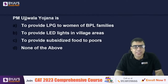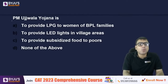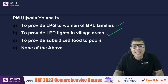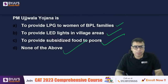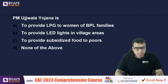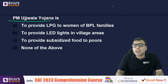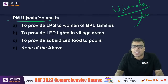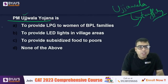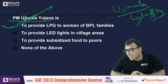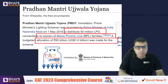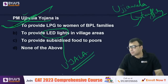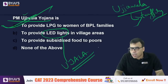PM Ujjwala Yojana is related with what? Options: providing LPG to women of BPL families, providing LED lights in villages, providing subsidized food to the poor, or none of the above. The right answer is A — providing LPG cylinders to women of BPL families. Note: there is another scheme with a similar name related to fighting human trafficking — do not confuse the two.